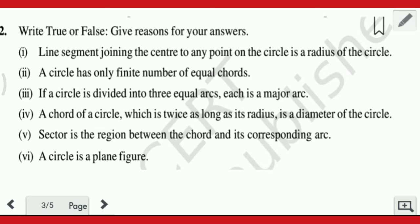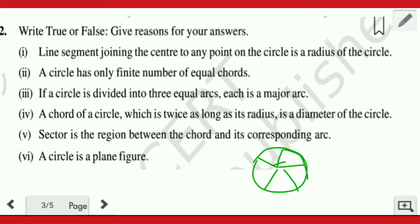Line segment joining the center to any point on the circle — if we join the center to any point on the circle, all such lines will be radius. Because all the points on the circle are at equal distance from the center. This is from the definition of a circle — all points are at equal distance from the center, so that distance is the radius. So this is TRUE.